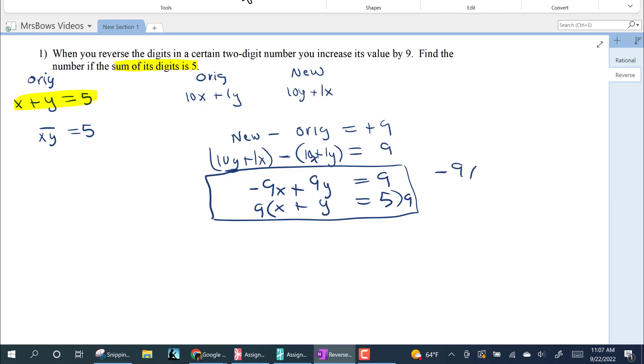I'm gonna now say negative nine x plus nine y is equal to nine, and then nine times x is positive nine x. Nine times y is positive nine y. Nine times five is 45.